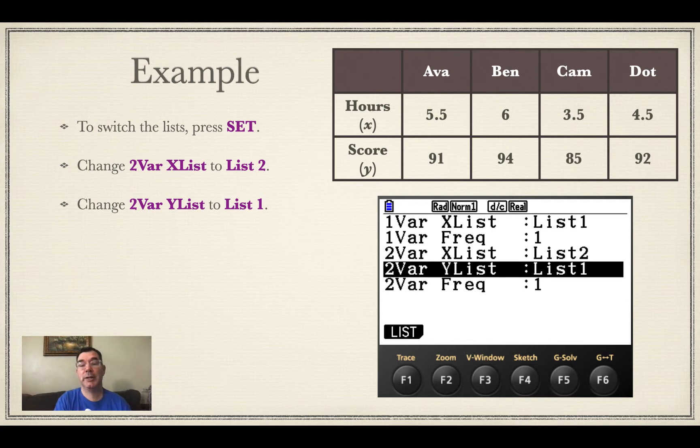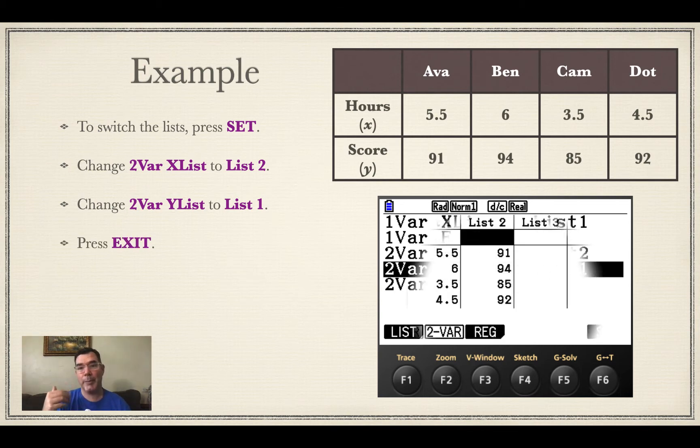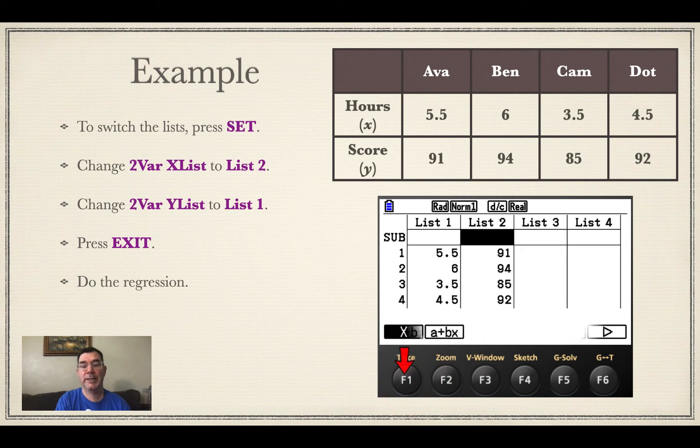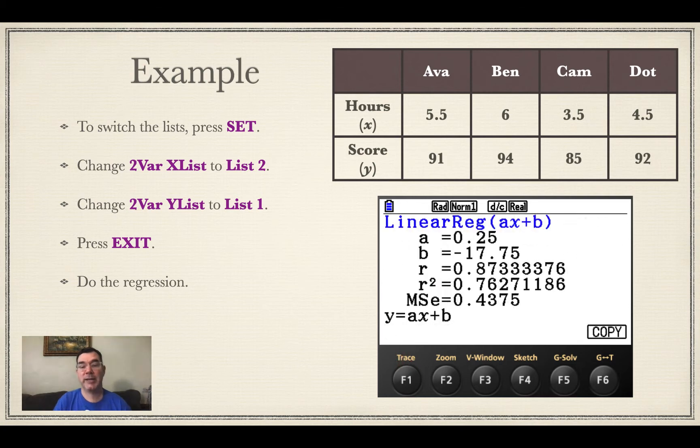So even though list 1 has my X's and list 2 has my Y's, the calculator is going to treat the Y's like the X's and the X's like the Y's. I just have to remember that in my problem I switched them. So I press exit and now I do a regression just like normal. It is linear, so I press X and I press F1 for AX plus B and so that's what it gives me.